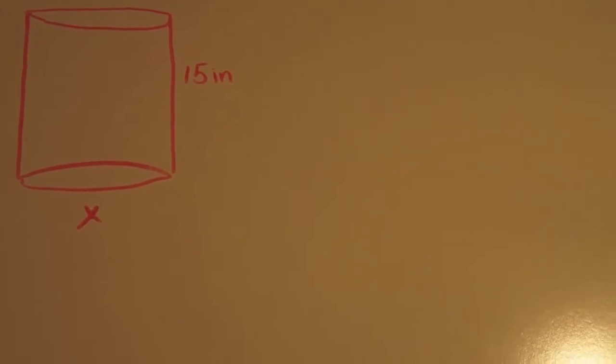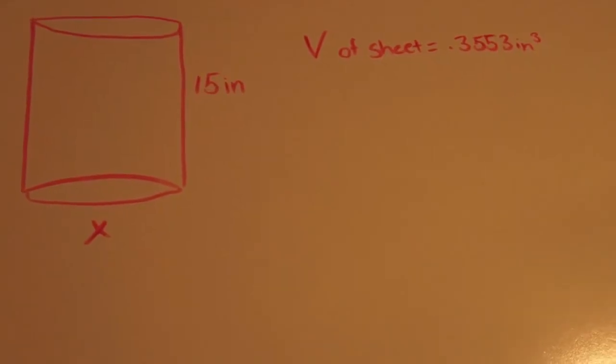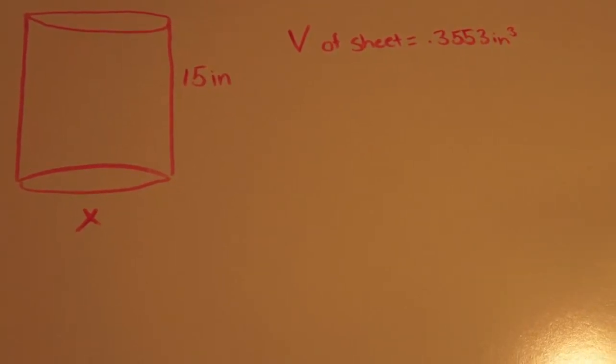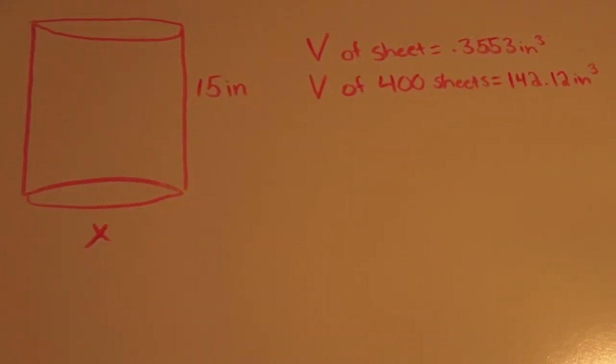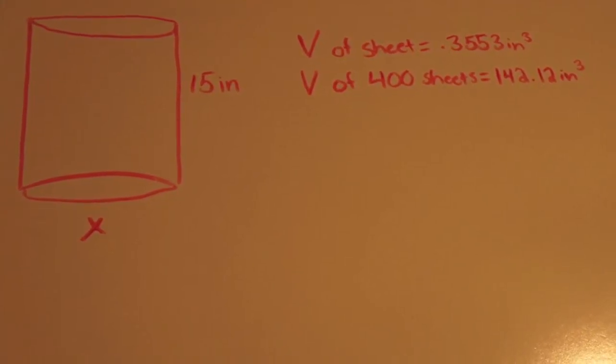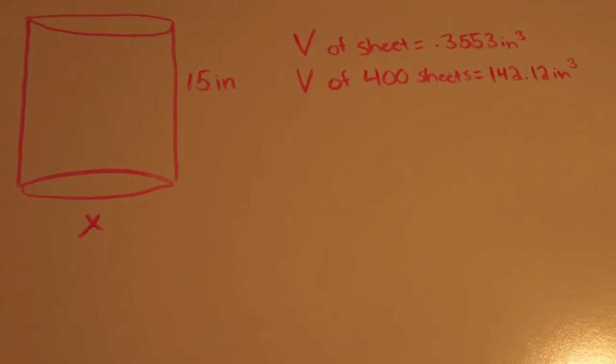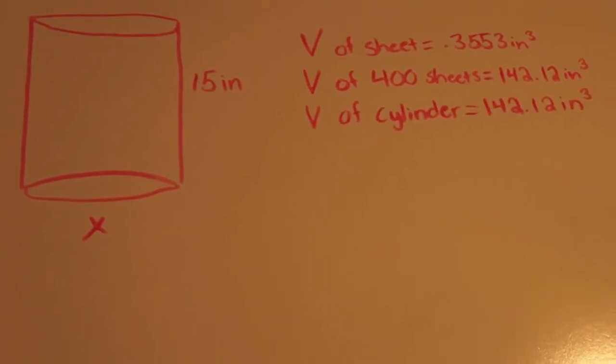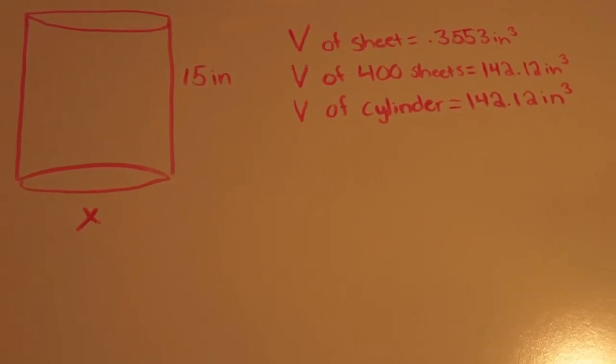I know that the height of the figure is 15 inches tall. I know from earlier that the volume of a sheet of paper is 0.3553 inches cubed. If I multiply that number by 400, I get that the volume of 400 sheets of paper is 142.12 inches cubed. That number is also the volume of the cylindrical figure.